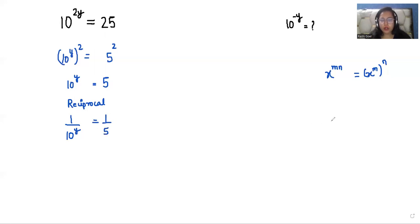Now according to the rule of exponents, x power m divided by n we can write as x power m minus n. So we can write it as 10 power minus y equals 1 over 5.